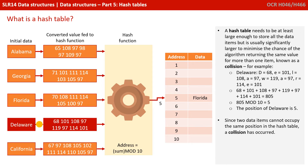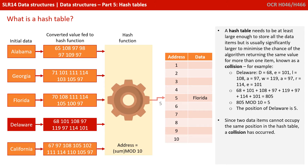A hash table needs to be at least large enough to store all the data items, but is usually significantly larger to minimise the chance of the algorithm returning the same value for more than one item. Now, this is known as a collision.